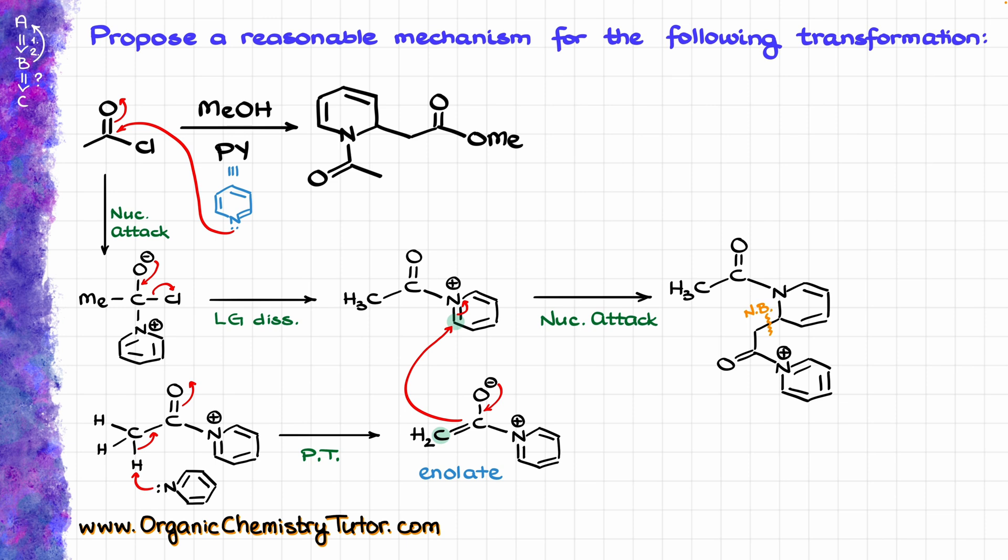Now, finally, we are ready to make our ester, so we are going to bring the methanol that I have floating around, and I'm going to show how this methanol is going to attack our electrophilic carbonyl. So, these electrons go here and attack the carbon, electrons go up, electrons go down, and kick our leaving group out, which in this case is going to be the pyridine moiety.